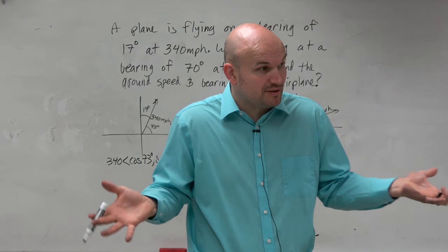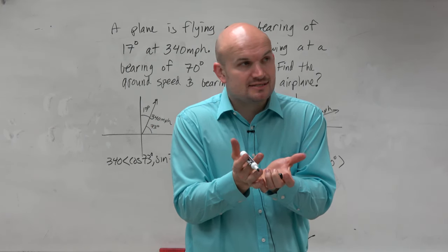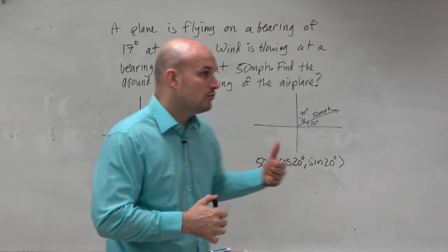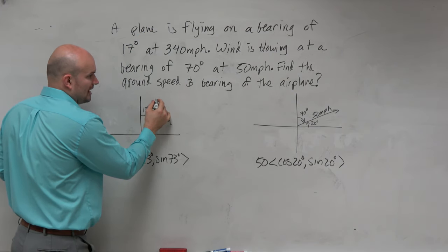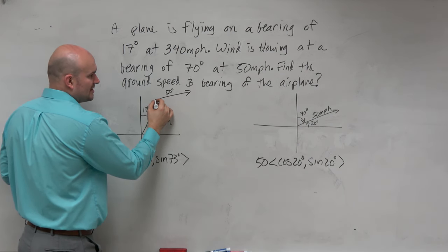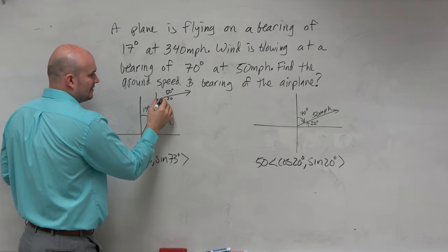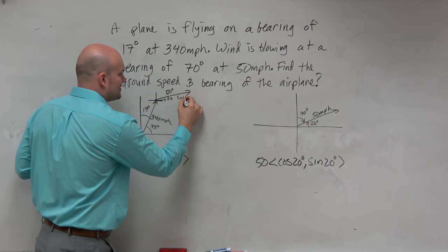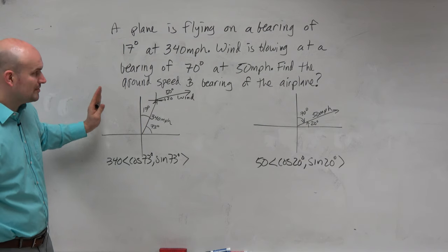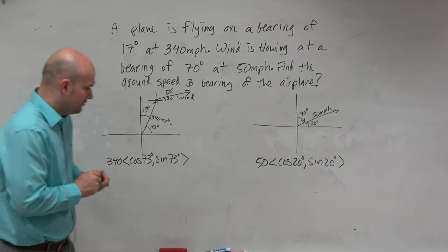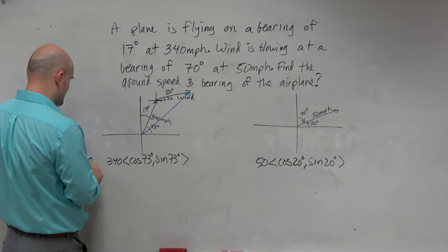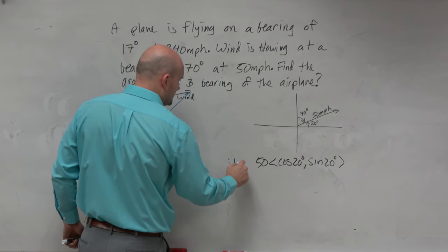The ground speed is asking us: what is happening to the plane as the wind is impacting it? Basically, what we're looking for is the resultant vector. Here's the plane — what happens when I add the wind vector? The wind is at 50 mph at 20 degrees standard angle. If I take the wind and apply it to the airplane, where is the airplane going to be going? What is this new angle, which can be represented by this resultant vector?